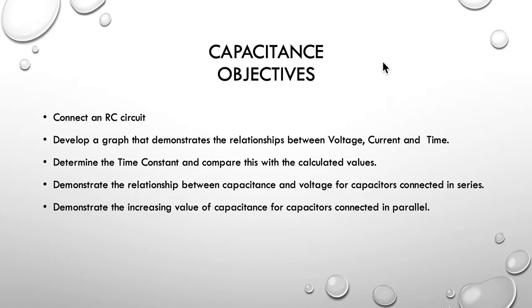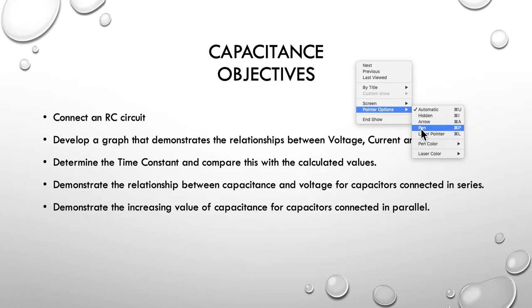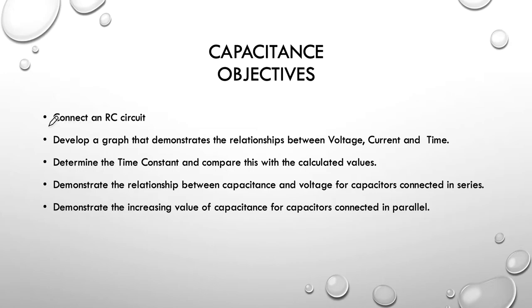So here are the objectives of our lesson. We're going to look at how we connect an RC circuit together. Then we're going to develop a graph that demonstrates the relationship between voltage, current and time, both from the perspective of charging the capacitor and discharging a capacitor through the resistance.